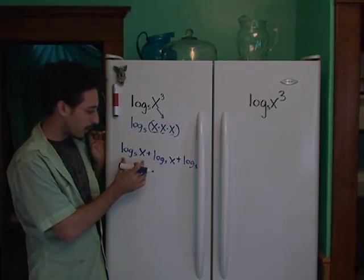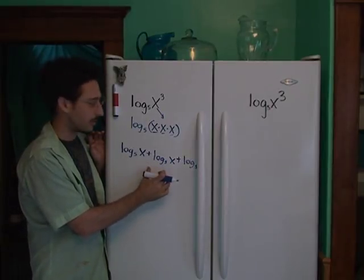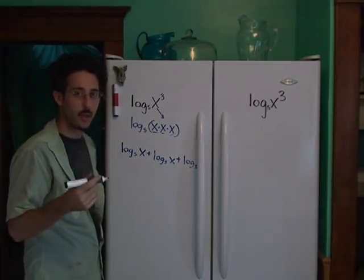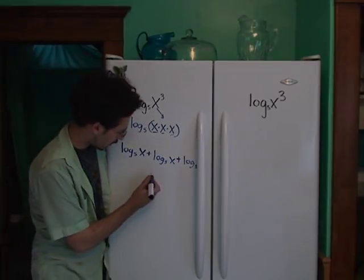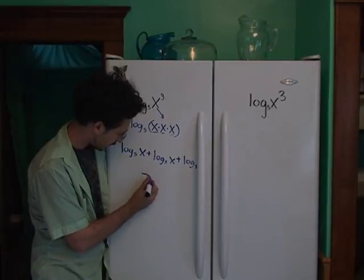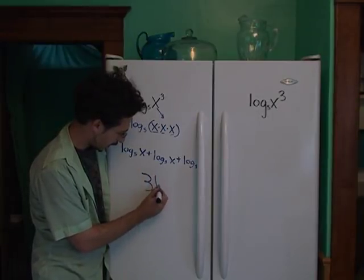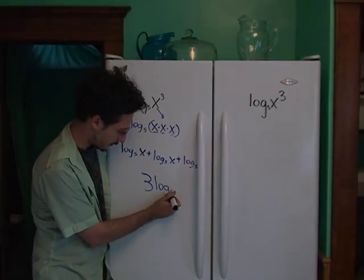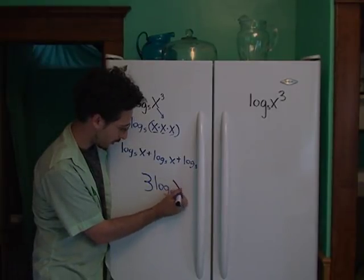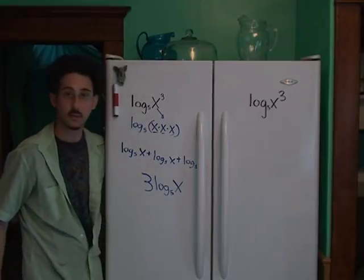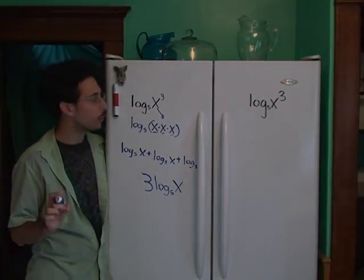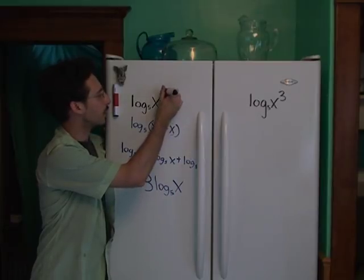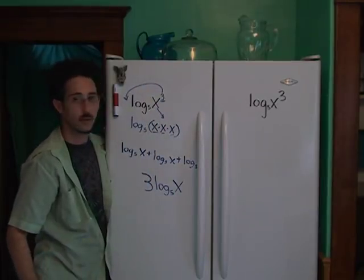Now, if we have log base 5 of x plus log base 5 of x plus log base 5 of x, that just means we have 3 of the same thing being added together. So it's just 3 log base 5 of x. So functionally, what we've done is we've taken this little 3 and we've moved it around to the front.